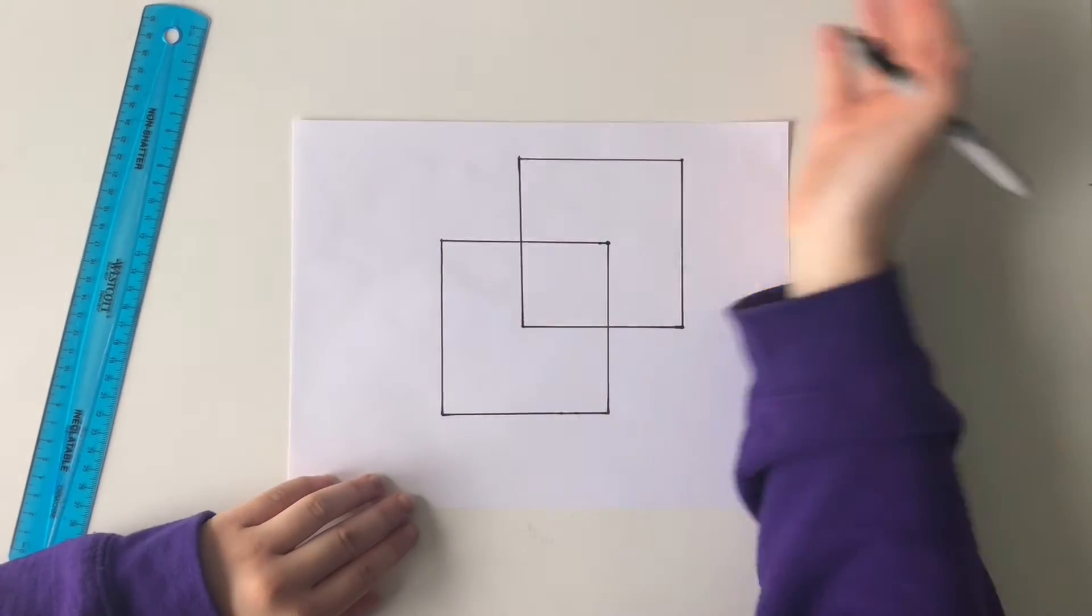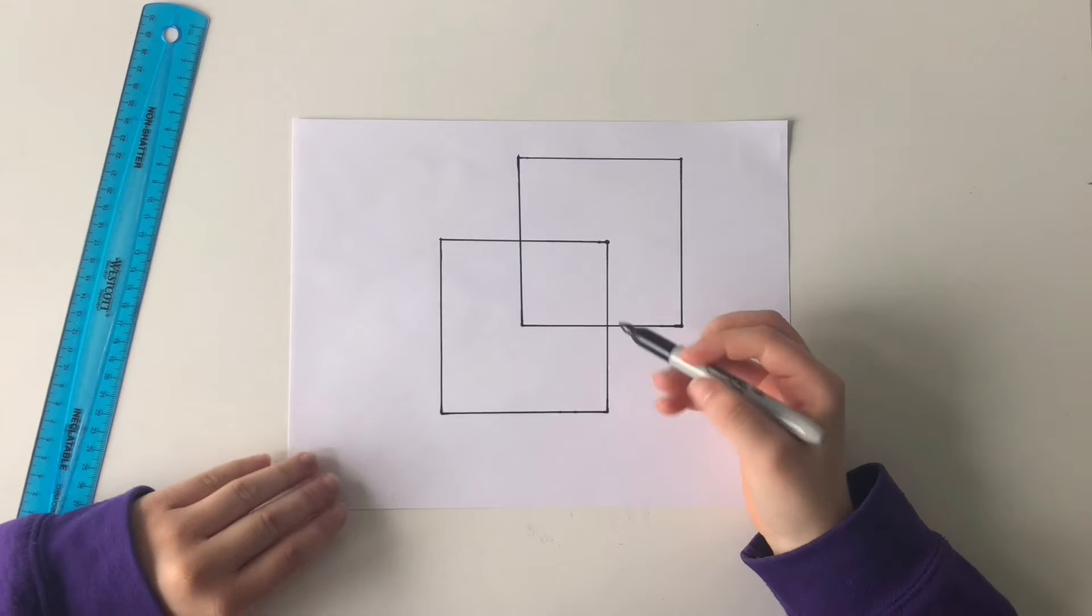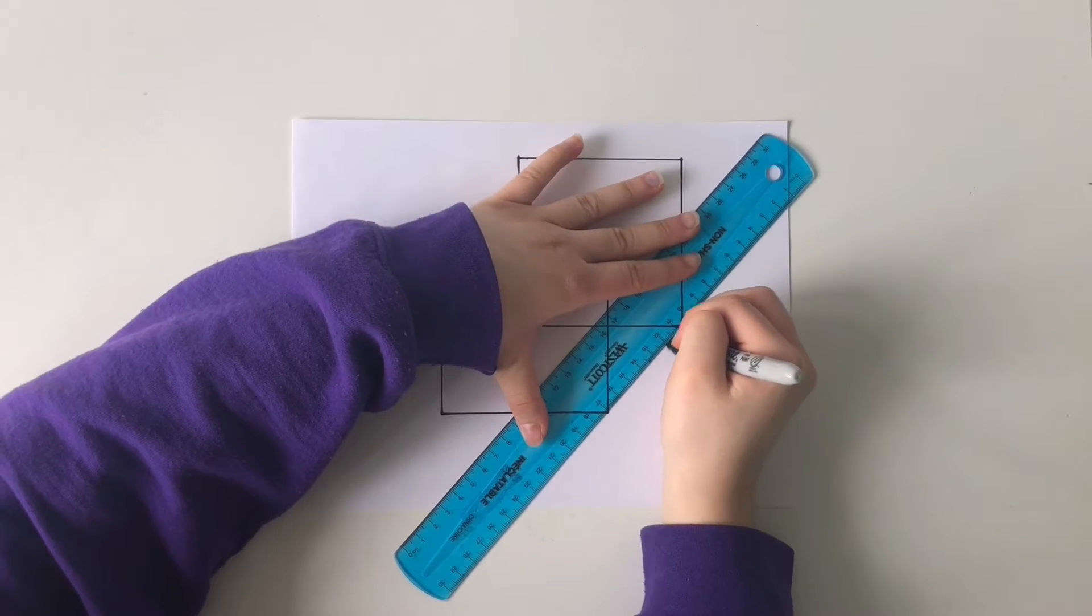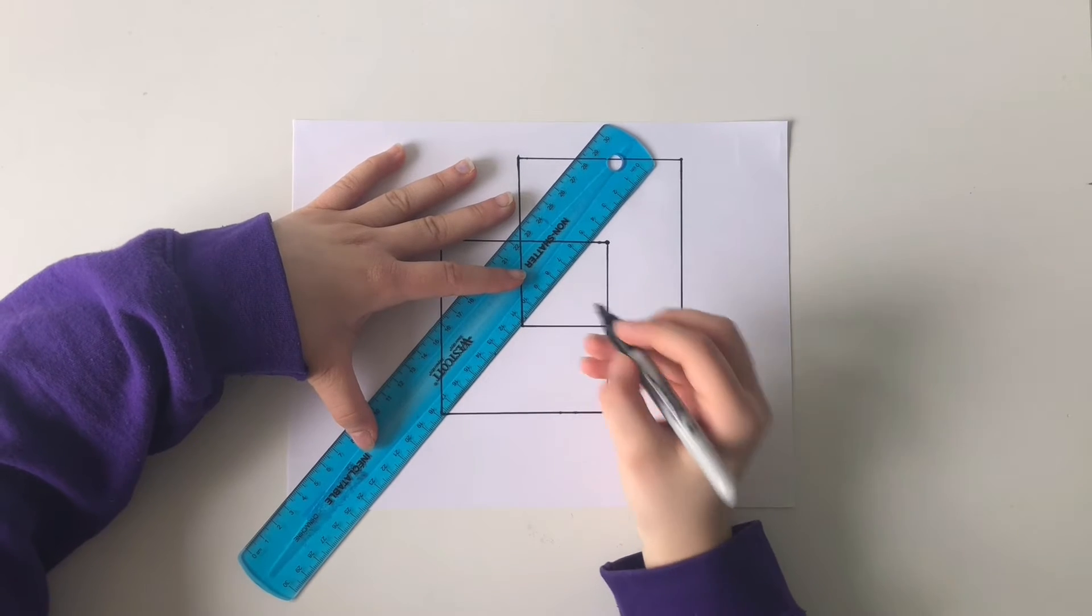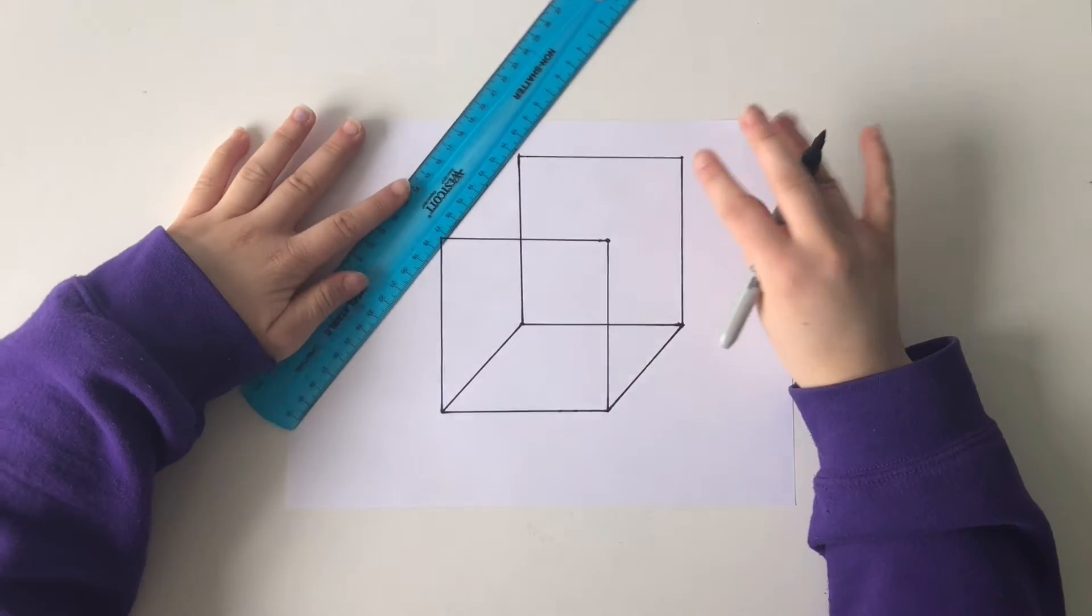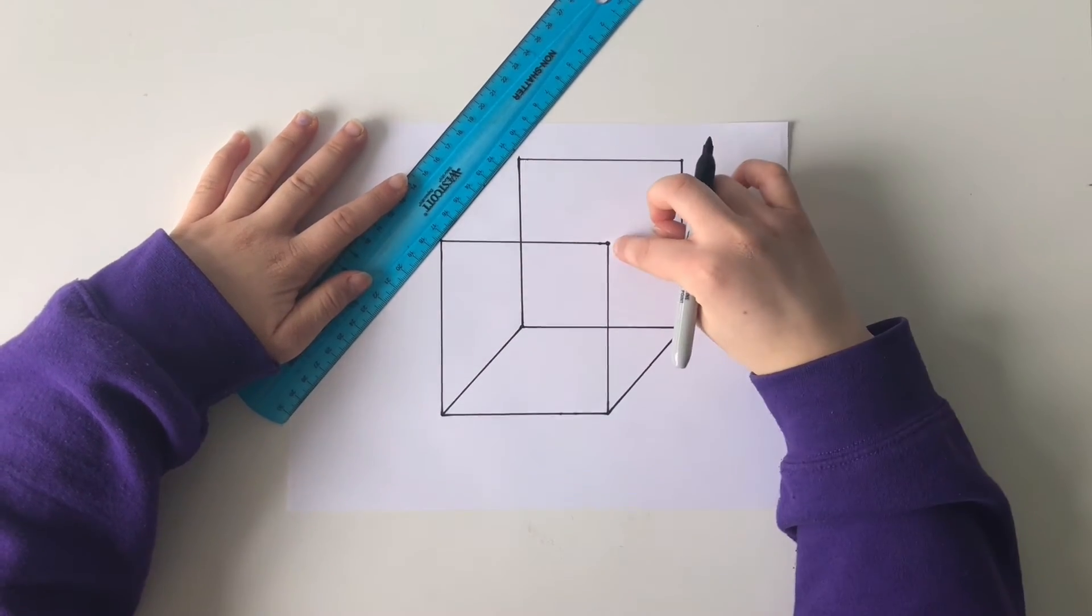We're going to start off with the bottom. Find the two bottom right corners of each square here and here. And now connect those together. Repeat that on the bottom left side. Do the same thing on the top left and top right corners.